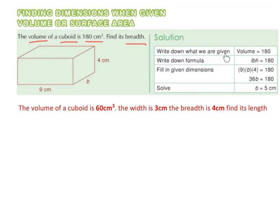So our steps are: we write down what we're given. Volume equals 180. Then we write down the formula for the volume of a cuboid, which is the length by the breadth by the height.